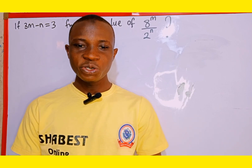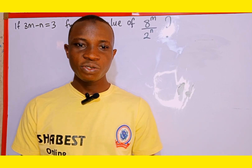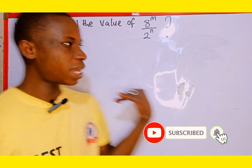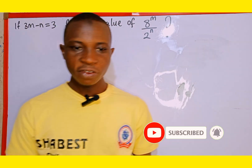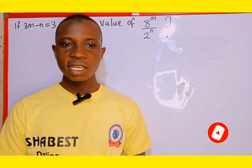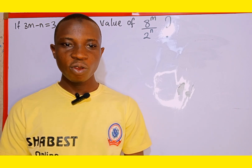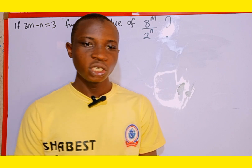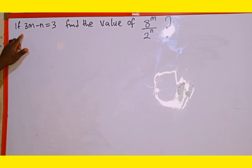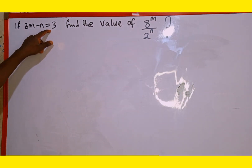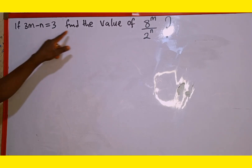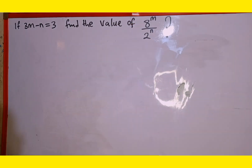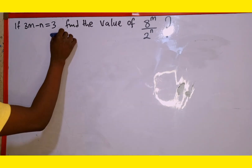Hello, welcome back to Shabez Online Tutorial. In today's tutorial we are going to learn how to provide a solution to this simple olympiad mathematics on the board. If you are new here, consider subscribing to my channel and also follow me on Facebook, TikTok, Instagram at Shabez Online Tutorial. The question on the board is: if 3m minus n is equal to 3, find the value of 8 to the power of m over 2 to the power of n. Let's get started.